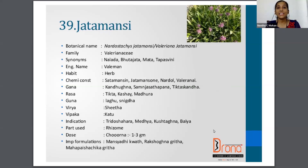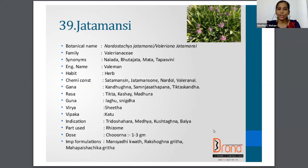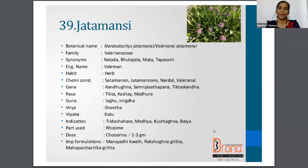The next drug is Jatamansi, botanical name Nardostachys Jatamansi, family Valerianaceae. Synonyms are Nalada, Bhutajata, Tapasvini, etc. The English name is Spikenard. The part used is rhizome and the dosage of Churna is 1 to 3 gram.